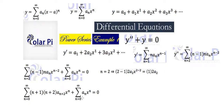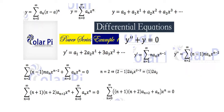Now that both sigmas start at n equals zero and end at infinity, we can put them together. Since we have x to the n as a common factor in both, we take advantage of that and write a single sigma. This is what we'd write — you can carefully check that this is the same as what we had before.